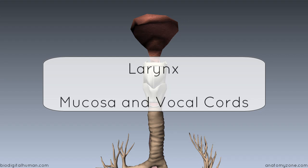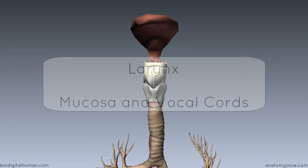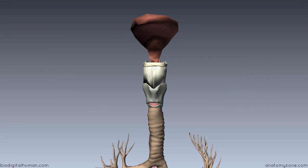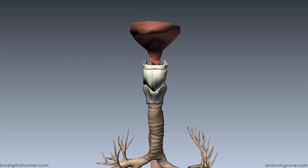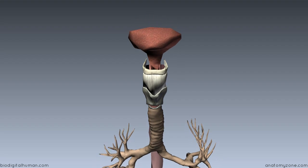This tutorial is on the mucosa of the larynx. We're going to look at how the mucosa folds to form the true and false vocal cords. We're looking anteriorly at the larynx here.